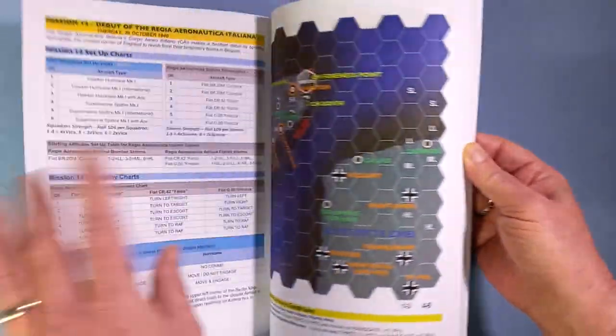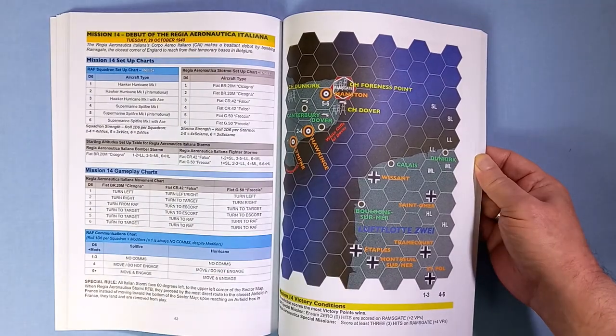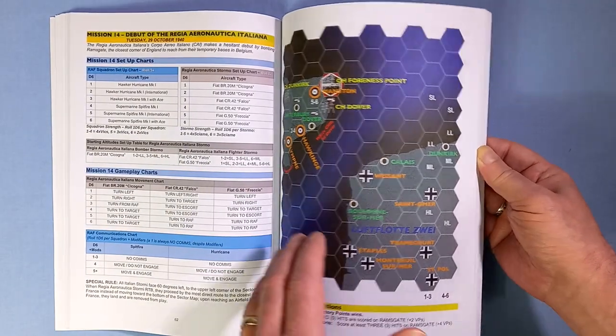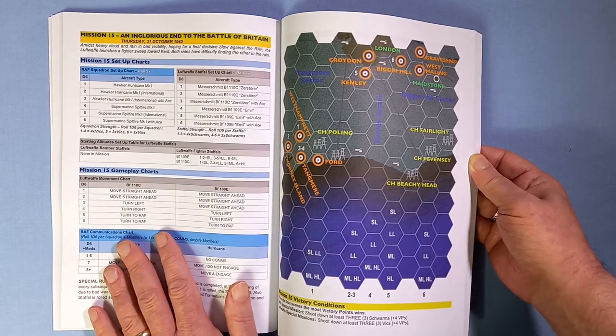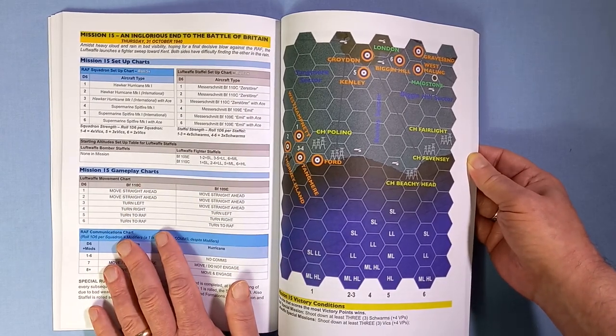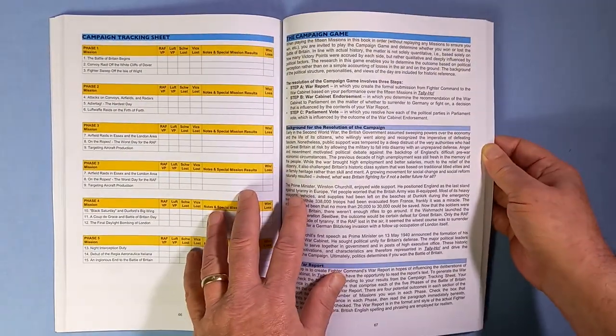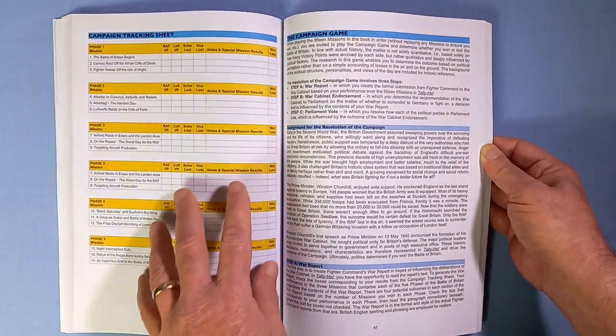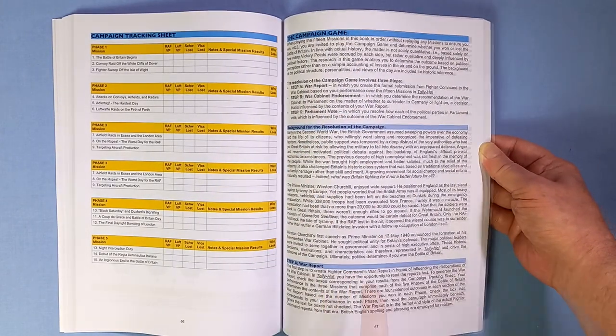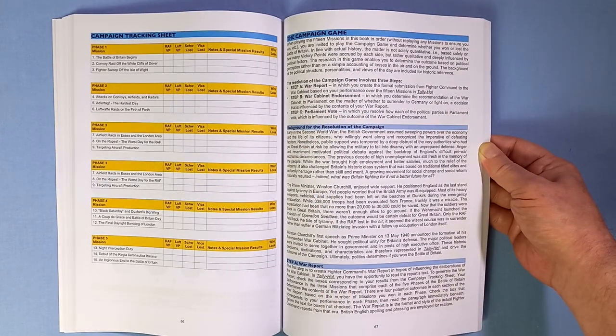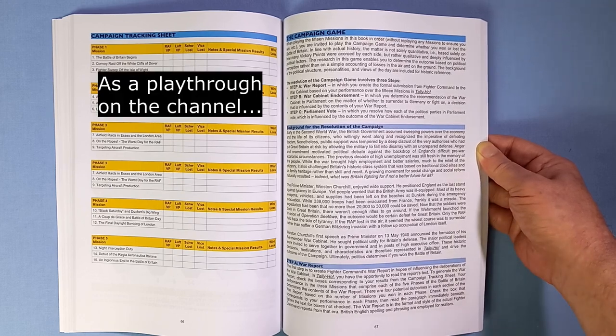Then right at the end we have - here's the Italians making their appearance. And then at the end, an inglorious end to the Battle of Britain, 31st of October 1940. Campaign tracking sheet. Now if you want to do this campaign game, I probably won't do the campaign because it is very involved - we have to play the full 15 missions.